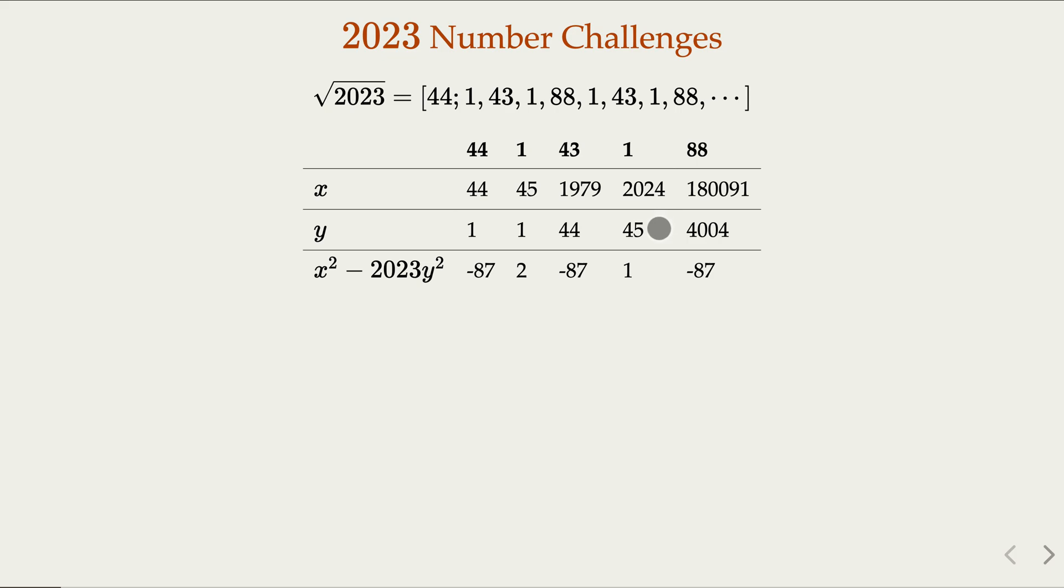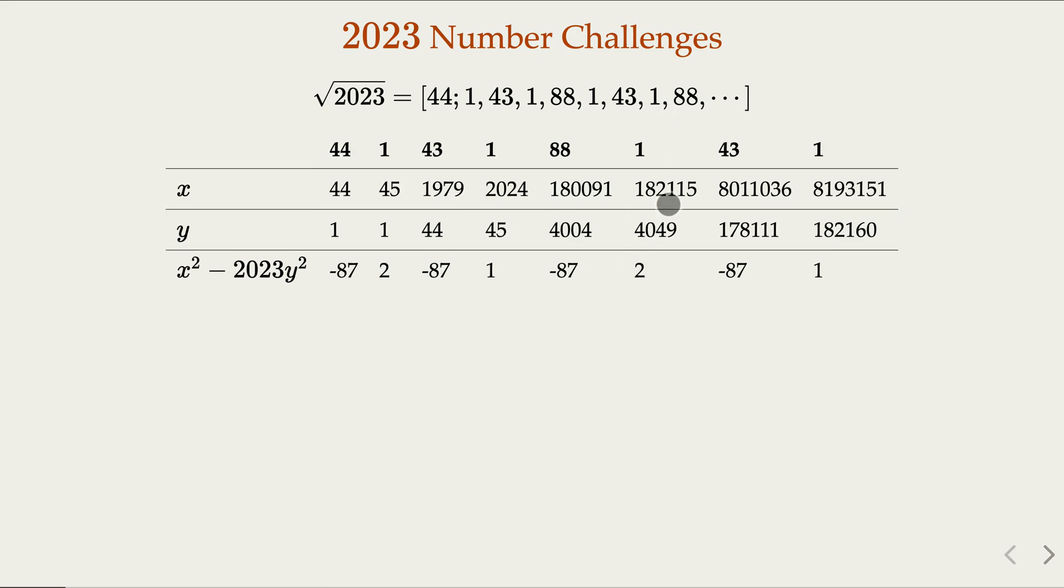That means 2024 and 45 is actually a solution to the equation. That's called fundamental solution, because x, y would be smallest in the absolute value. So 2024, 45 is a fundamental solution. If we continue the process with more integers, with 88, and further 1 and 43, and then 88, when you go to this 1 here, you're going to have another solution. If you have 1 here, this value is going to be 2. Every 4, you're going to have a solution. The next solution is going to be x equals 8193151, and y equals 182160.